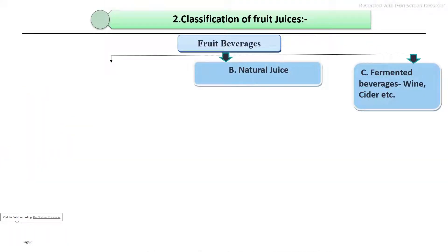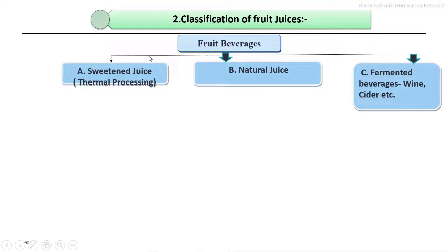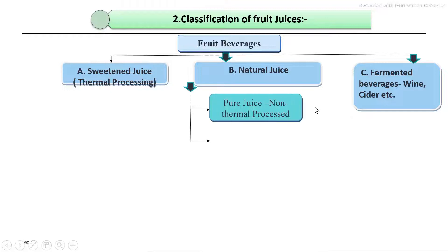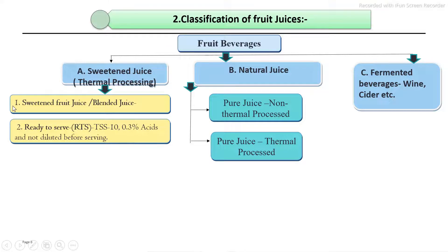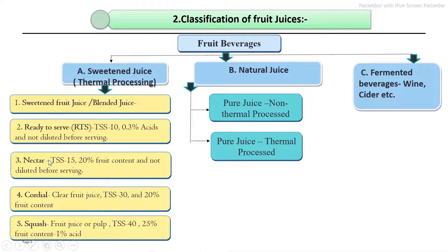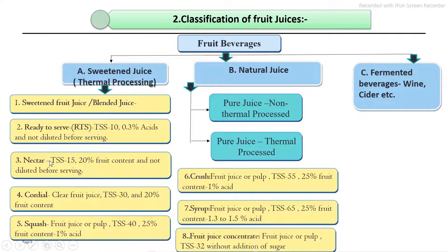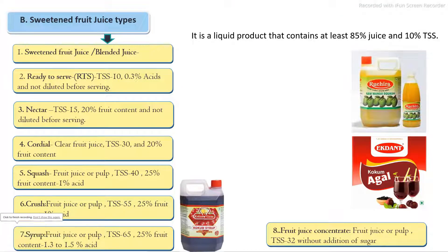The basic classification of fruit juices: the first group is sweetened fruit juices, mostly thermal processing. The second is natural juice, and the third is fermented beverages such as wine and cider. Natural fruit juice may involve non-thermal or thermal processing. Sweetened fruit juices include single fruit juice or blended RTS beverages, nectar, cordials, squash, crush, and syrups. These are the major groups of sweetened fruit juice with minimum requirements for TSS, acidity, and fruit content.